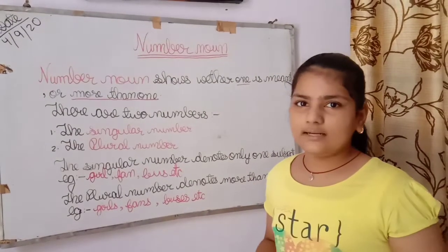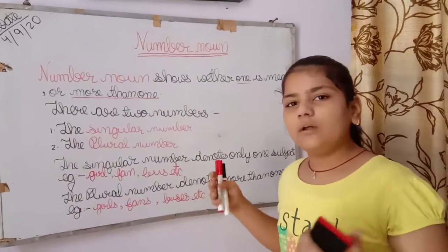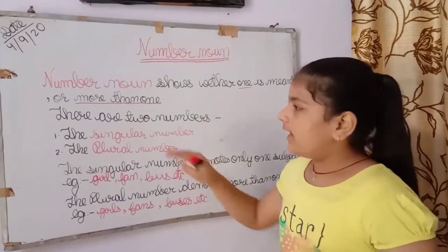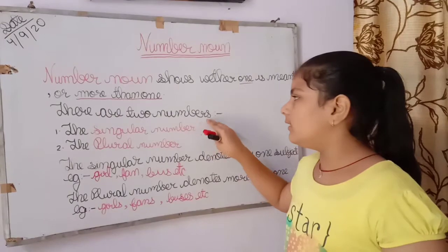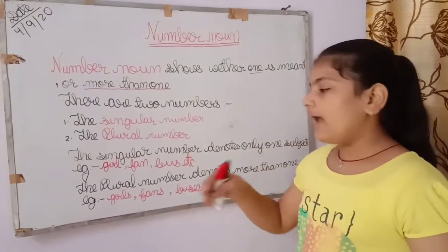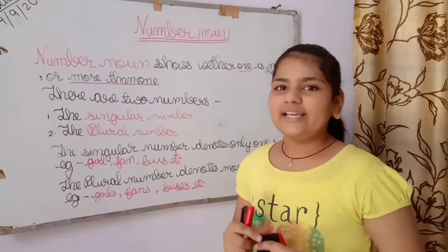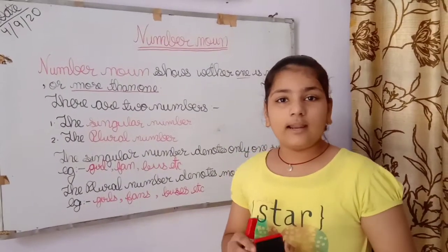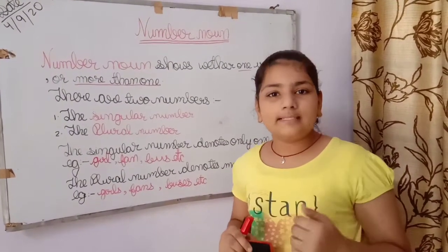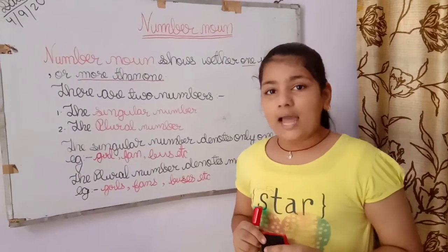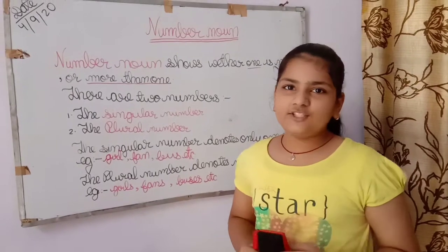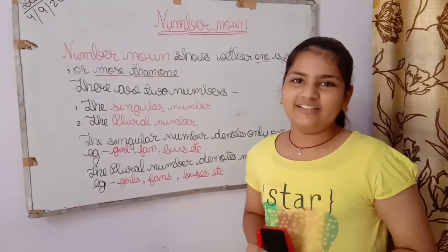So let's revise in English: number noun shows whether one or more than one. There are two types of number noun — singular and plural. Singular denotes only one and plural denotes more than one. Thank you. Please see my other videos on noun and kinds of noun, and if you are new to my channel, please subscribe and like. Thank you.